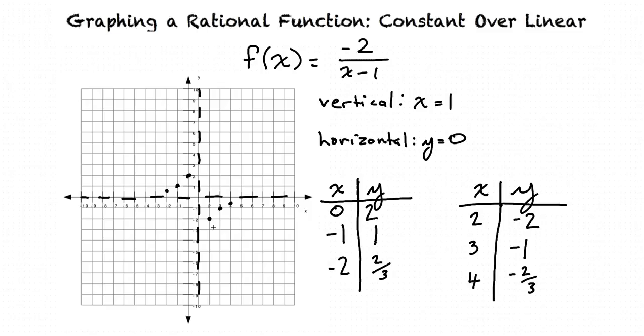Now that we've plotted these points, we can get a general idea of what our graph will look like, close to the intersection of our asymptotes. It goes through these points.